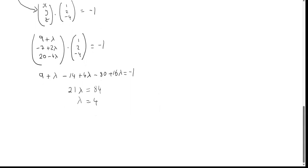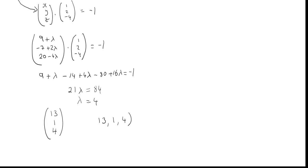Substituting λ = 4 back into the line equation: x = 9 + 4 = 13, y = −7 + 2(4) = 1, z = 20 − 4(4) = 4. The question asked for coordinates, so the answer is F = (13, 1, 4).